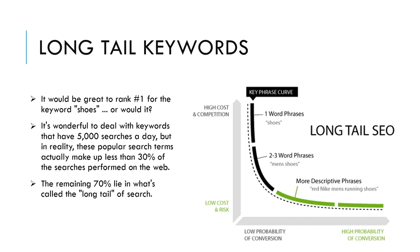Look at this graphic. If your site sells shoes, don't even try to rank for that generic search phrase. Rather, create a blog or a page with titles and meta descriptions using long tail keywords, such as men's shoe size, or red Nike men's running shoes. These are longer keyword phrases that, yes, are searched less than the keyword 'shoes' alone, but these long tail keywords are easier to rank for in Google.